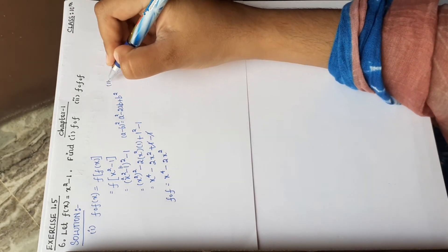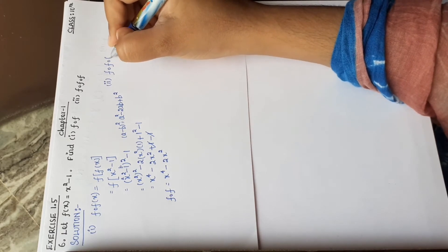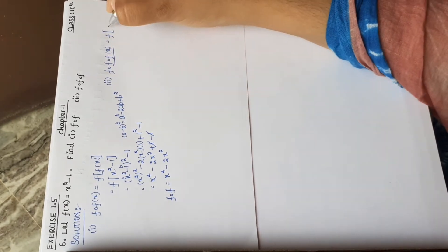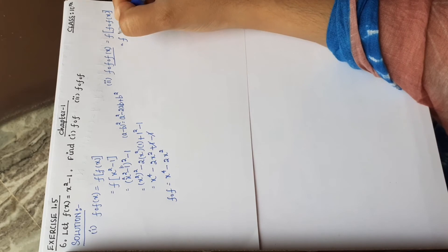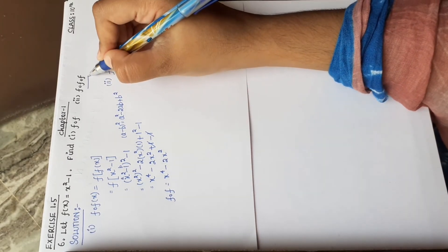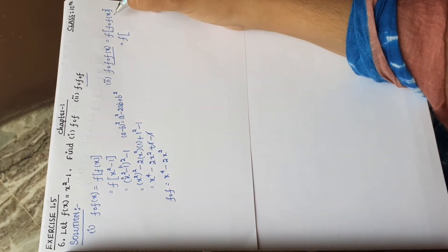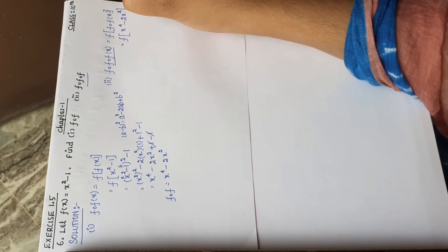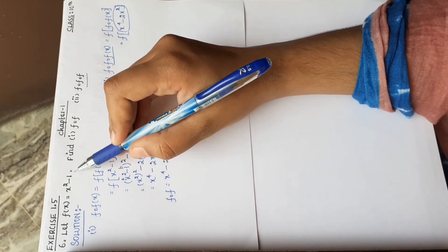Now we have the second subdivision. We have found that f of f is x power 4 minus 2x squared. Now f of x is equal to x squared minus 1, and this is f of x in consideration.